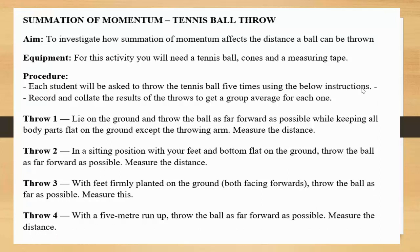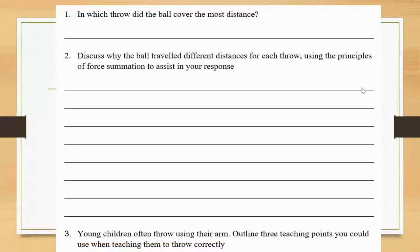When you record the results, naturally you're going to get a further result in throw four consistently. I'll be very surprised if that was not the case with your experiment. Why is that? Well, it's got to do with the summation of force. More body parts were involved, so therefore more force was generated. Which throw to cover the most distance? It should be throw four. Why did the ball travel different distances for each throw? Use the principles of force summation to assist you.